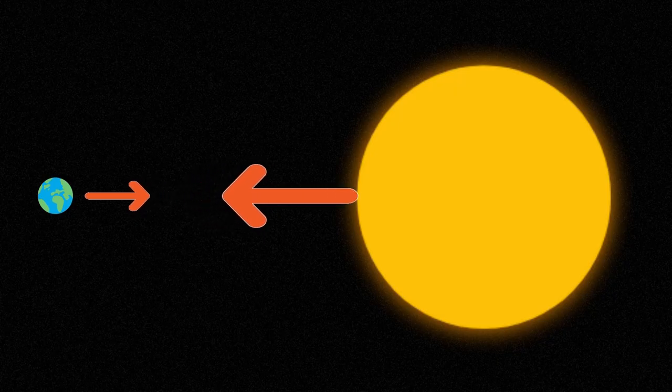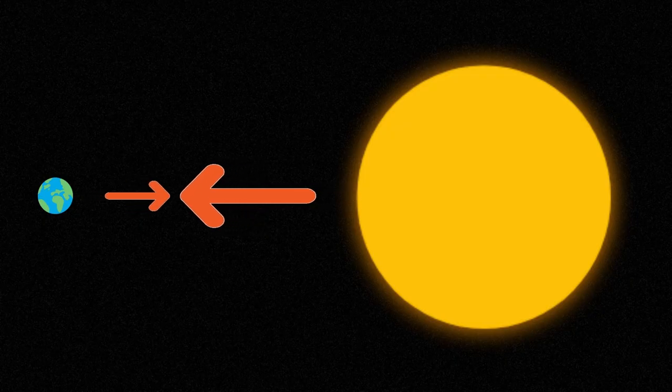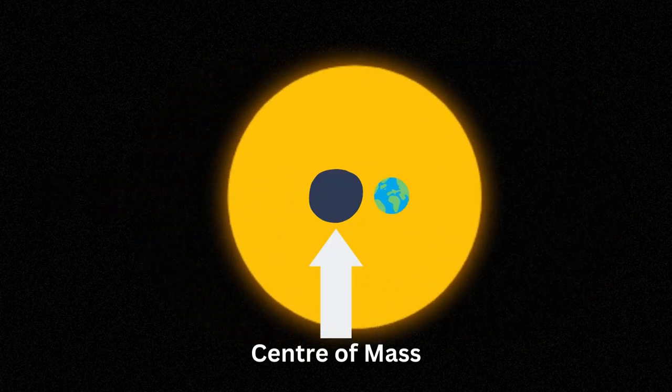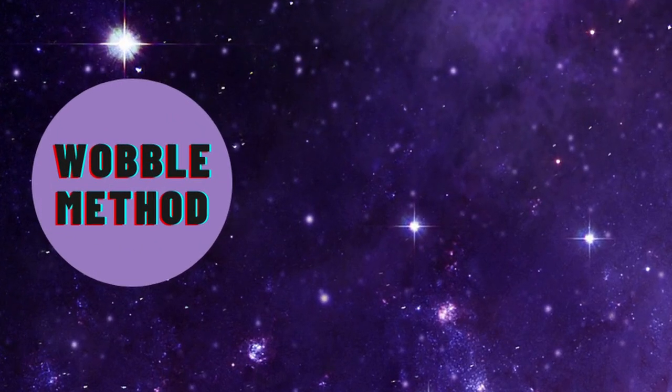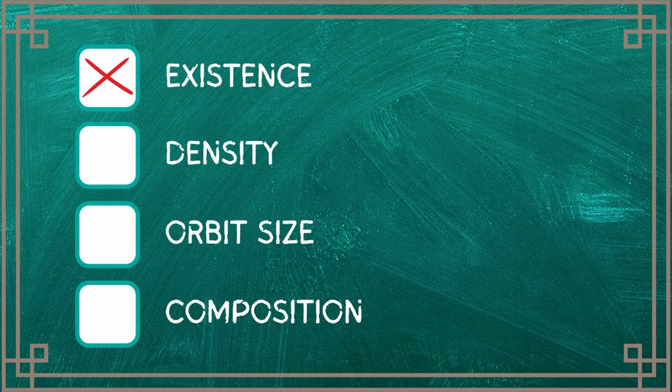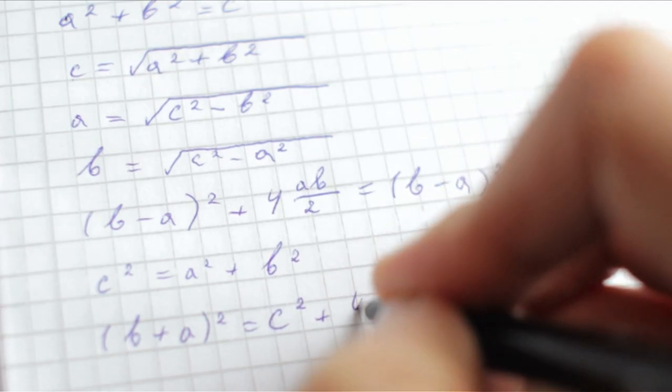We always think of gravity as acting in one direction — the Earth pulls us down. However, that is not true. Gravity is a force of attraction between two bodies, and each body attracts the other. The reason we never feel this effect in our daily lives is that we are much smaller than the Earth itself. However, with planetary systems, the story is different. Both a star and a planet experience a gravitational force with each other. They orbit around each other, or more specifically, a particular center of mass. This center of mass, whether it be within the star itself or outside it, causes the star to wobble, and we can detect this wobble over time. This technique is called the wobble technique, and it has helped us determine numerous exoplanets, as well as how far they orbit and their approximate mass, all with some knowledge about gravity and mathematics.